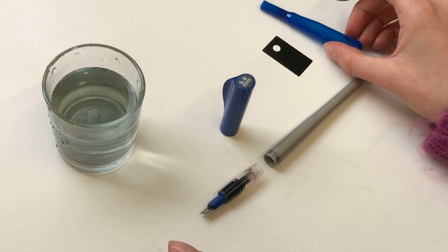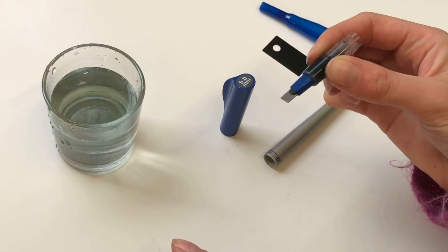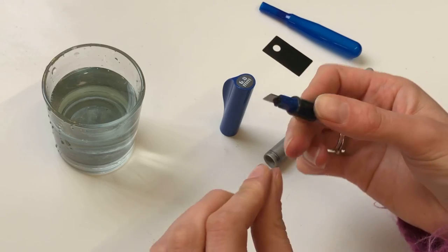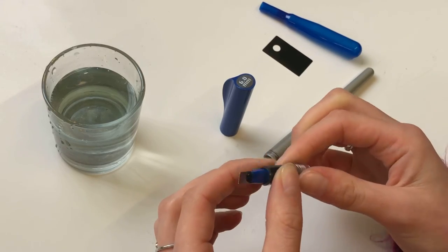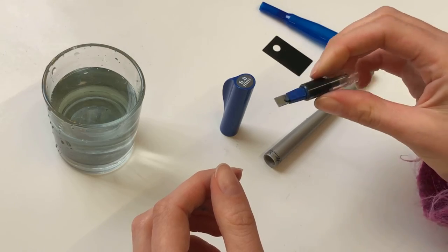So yeah, that is the basics of how to clean it. Some people do like to completely deconstruct the nib, so you can take all these pieces apart, but I generally tend not to. So yeah, if you want to do a proper deep clean, that's what you can do.